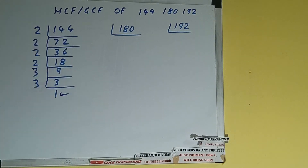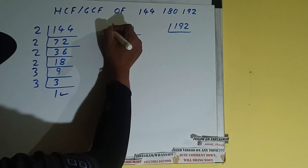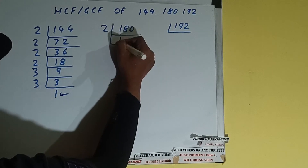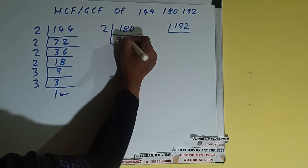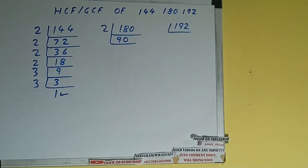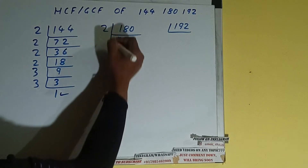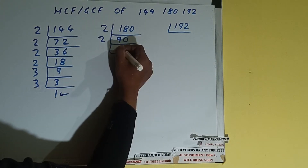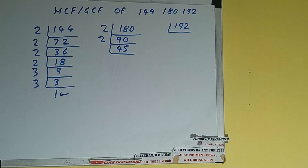Now the same thing we need to do with the number 180. We'll check with the lowest prime number 2. Is 180 divisible by 2? Yes it is, because the number is even, and we'll get 90. Is 90 again divisible by 2? Yes it is, and we'll get 45. Is 45 divisible by 2? No, it is not, because the number is odd. So we'll check with the next lowest prime number, that is 3.